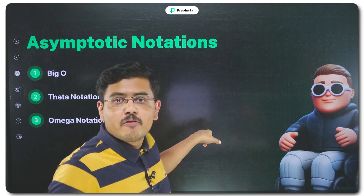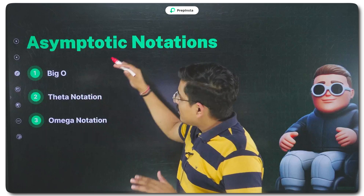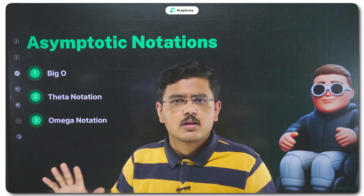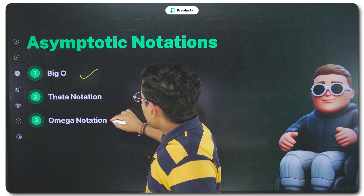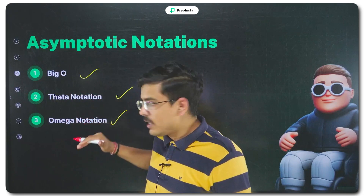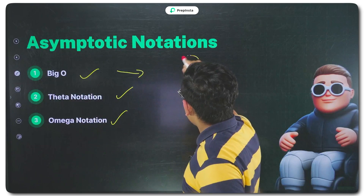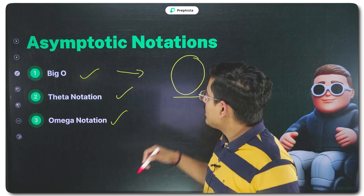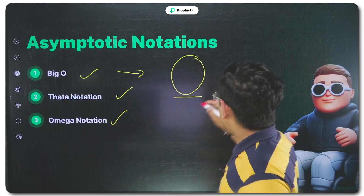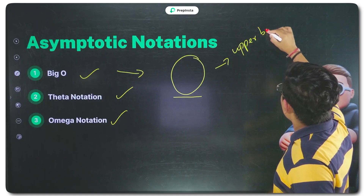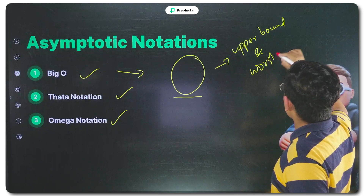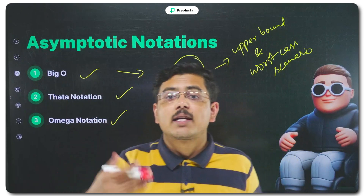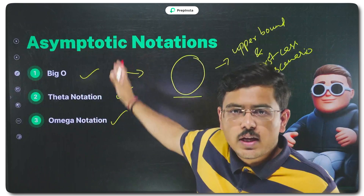Now, what are asymptotic notations? There are three asymptotic notations primarily used in the industry that you should know for placements: Big O, Omega, and Theta. These notations are tools to express time complexity — asymptotic notations are the tools, and time complexity is what they express. Coming to Big O notation: Big O represents the worst case, or the upper bound of an algorithm's time complexity.